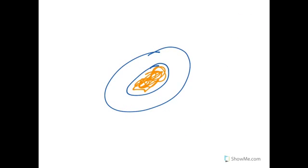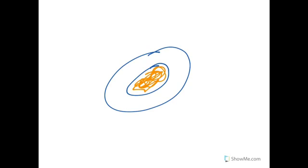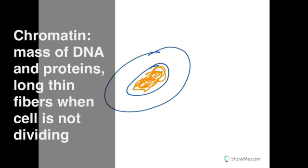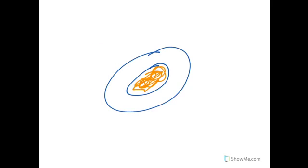So let's talk vocabulary really quickly before we move on. So in our cells, when our genetic information is not condensed, we call it chromatin. It's just going to be kind of floating around inside the nucleus of the cell. Now when it does condense, we can count the number of chromosomes in any given cell.